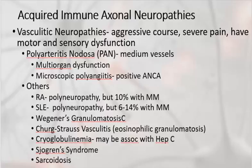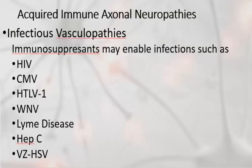Several other autoimmune disorders, such as rheumatoid arthritis and systemic lupus, which typically cause a polyneuropathy but in the minority of cases may present with mononeuritis multiplex, are also listed. The following is the list of infectious causes of acquired immune axonal neuropathies. These are particularly found in immunosuppressed patients, such as those with HIV, whose medications used to treat the underlying disorder may also cause neuropathies, but can also be complicated by superimposed infectious processes — and if you don't memorize these, I won't tell anyone.